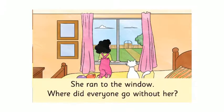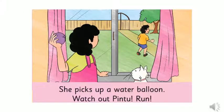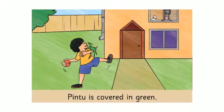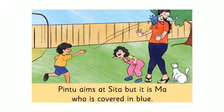She ran to the window. Where did everyone go without her? Sita sees her brother under the tree. She picks up a water balloon. Watch out Pintu! Run! Pintu is covered in green. Watch out Sita! Splash! Pintu aims at Sita but it is Ma who is covered in blue.